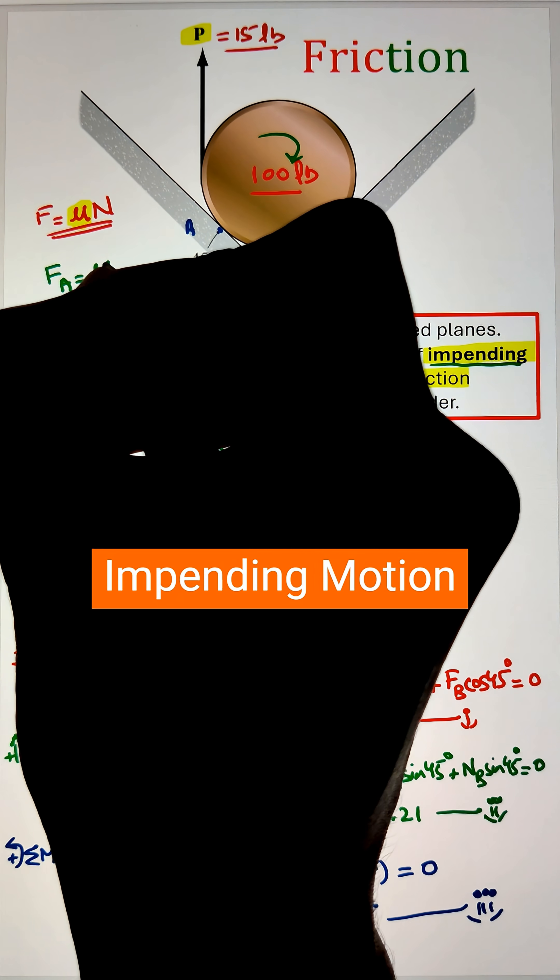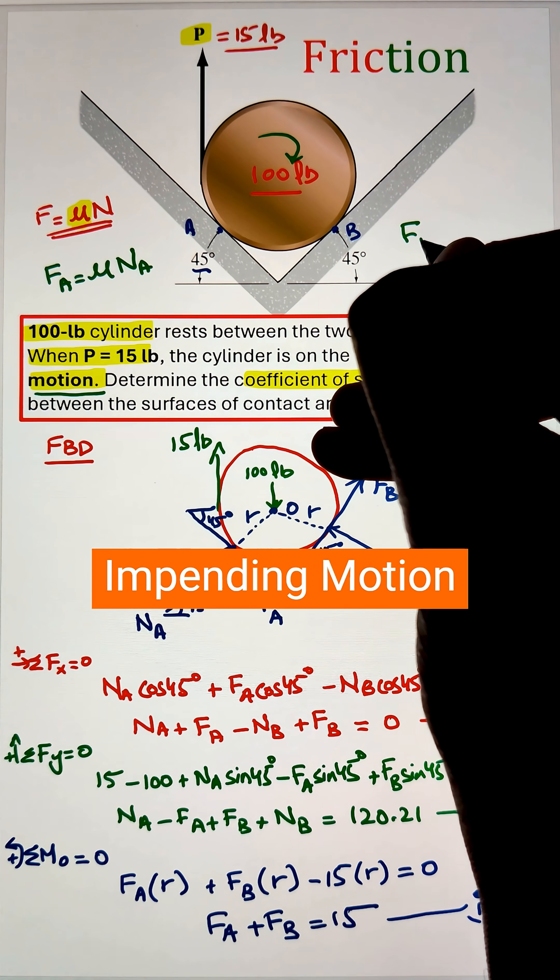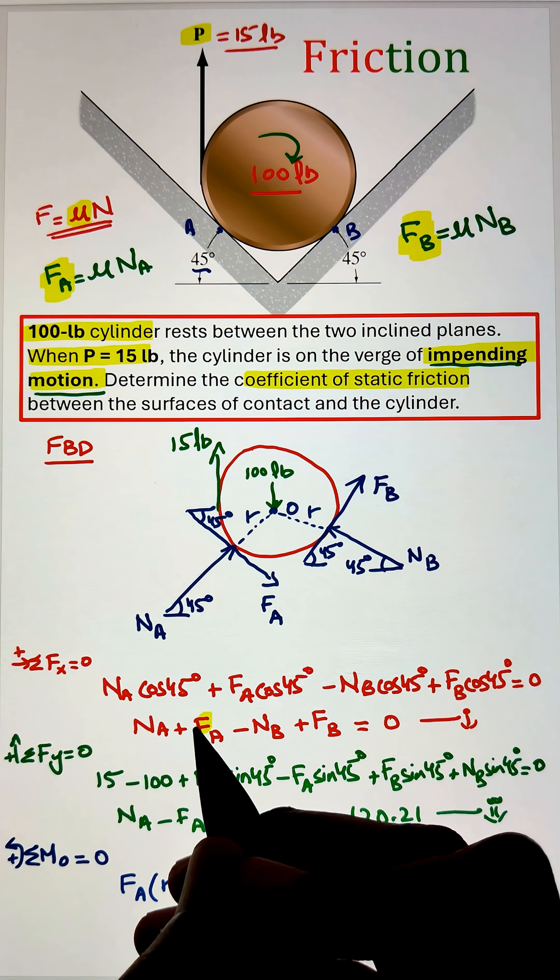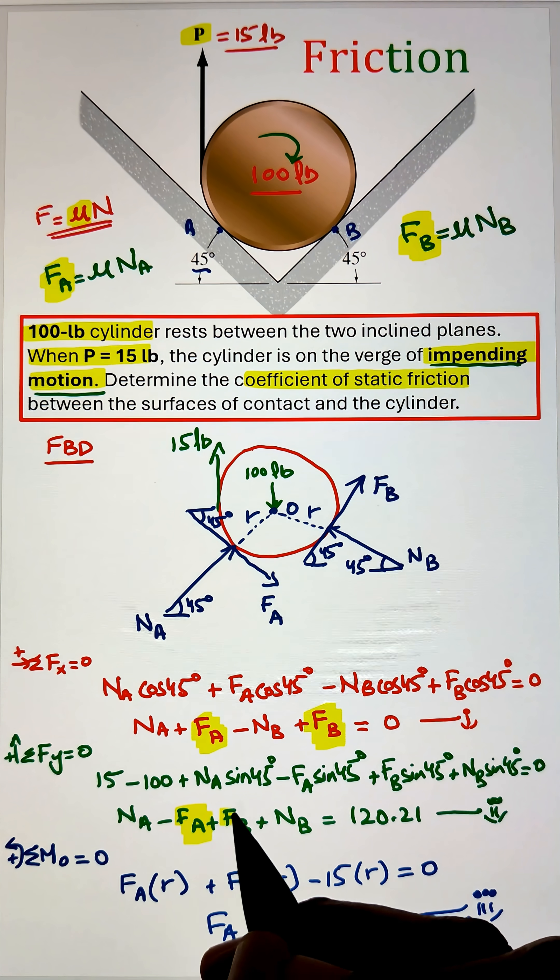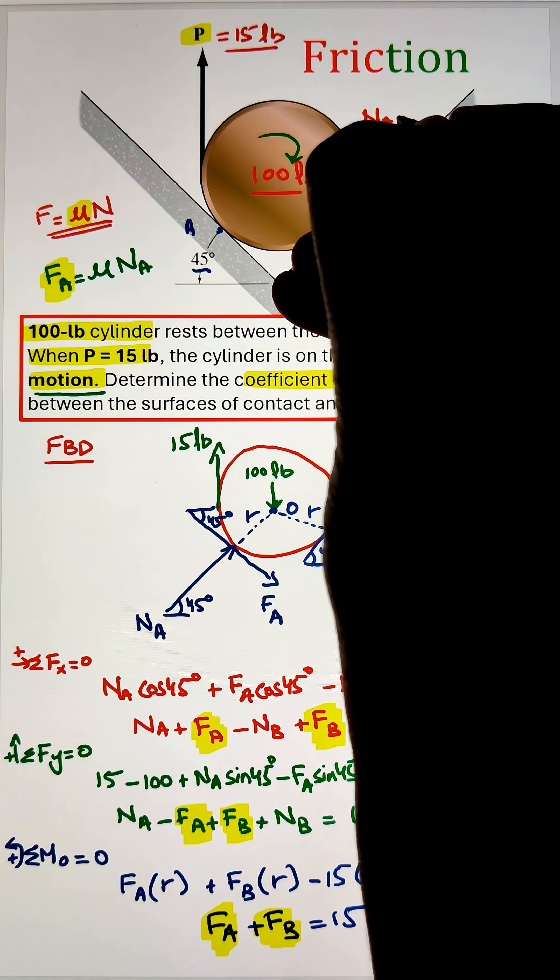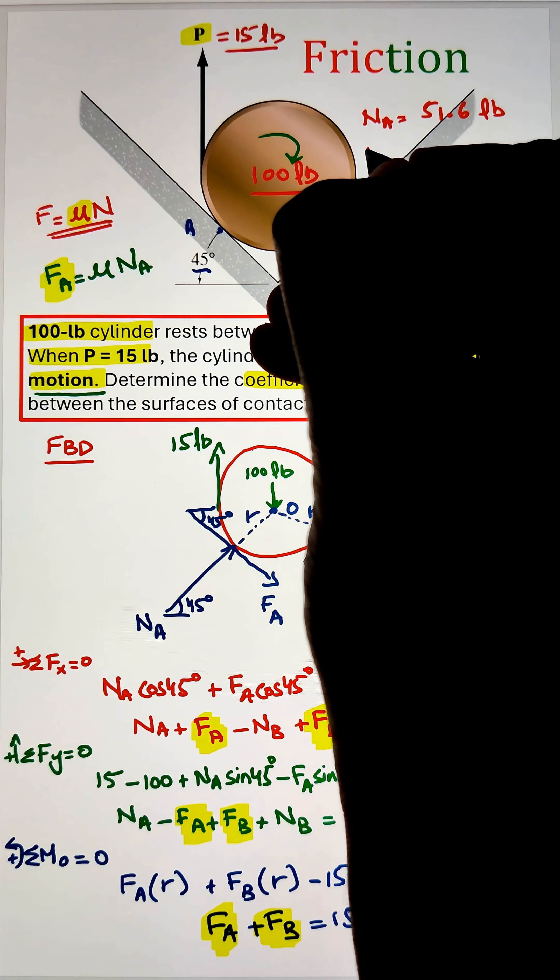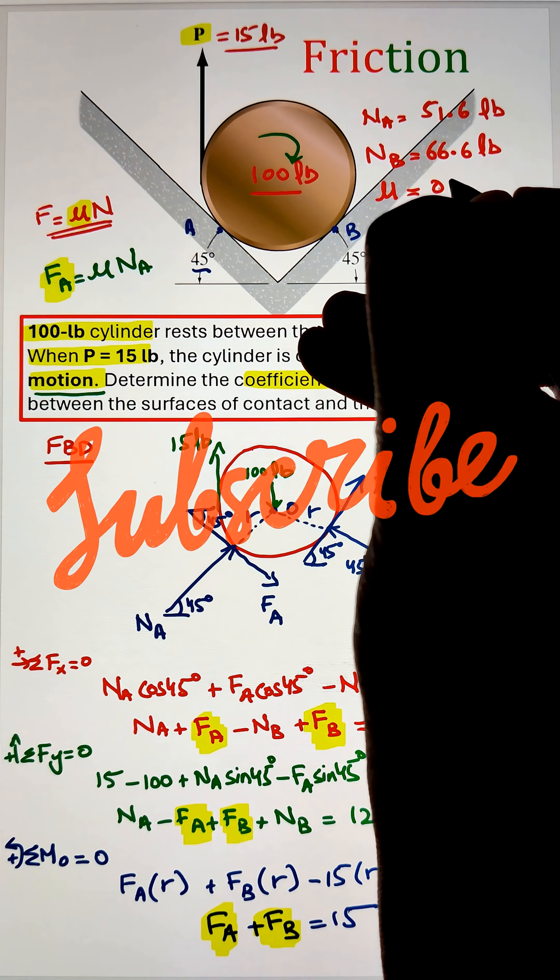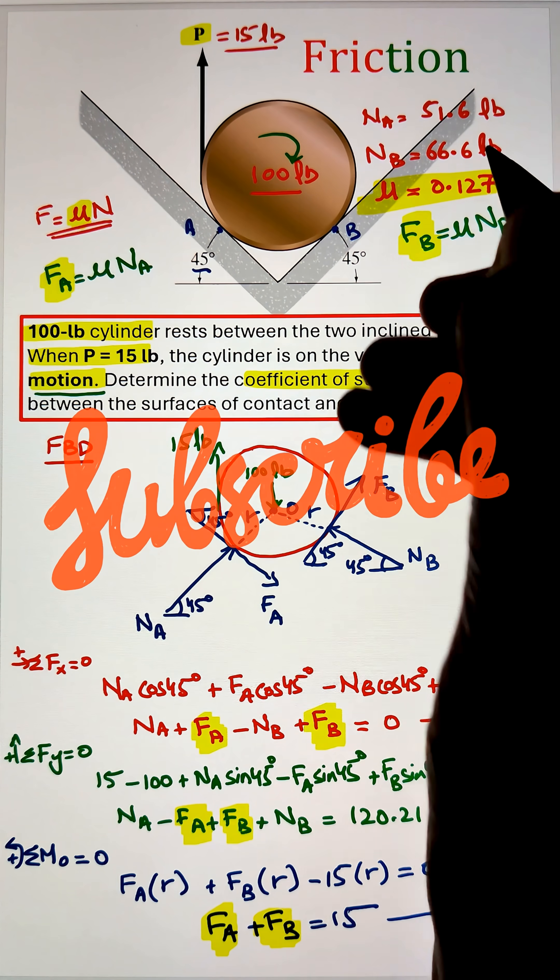Now since in the question it was mentioned that the cylinder is on the verge of impending motion, that means that our frictional force will be equals to the coefficient of static friction times the normal force at point A and point B. Now we can plug in the value of F A and F B from these equations in equation 1, 2, and 3 and simplify for the three unknowns. We are getting the value of the coefficient of static friction as 0.127.